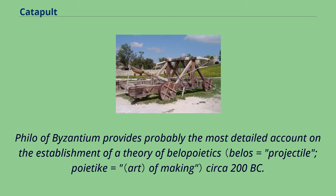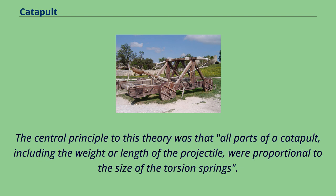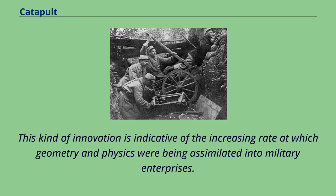Philo of Byzantium provides probably the most detailed account on the establishment of a theory of Belopoietics of making, circa 200 BC. The central principle to this theory was that all parts of a catapult, including the weight or length of the projectile, were proportional to the size of the torsion springs. This kind of innovation is indicative of the increasing rate at which geometry and physics were being assimilated into military enterprises.